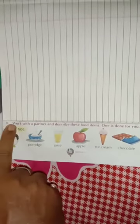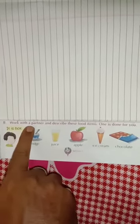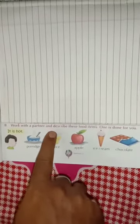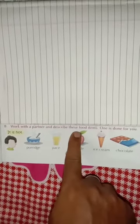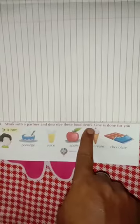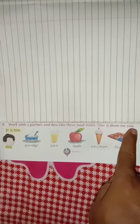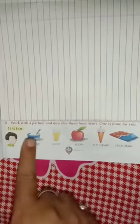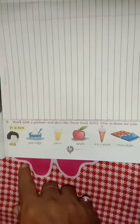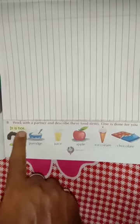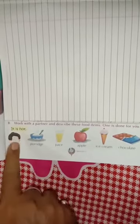Question number B, work with a partner and describe these food items. One is done for you. Porridge. How is porridge? It is hot. As like this,